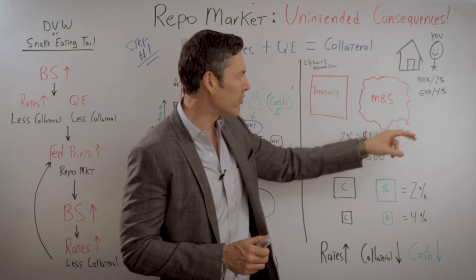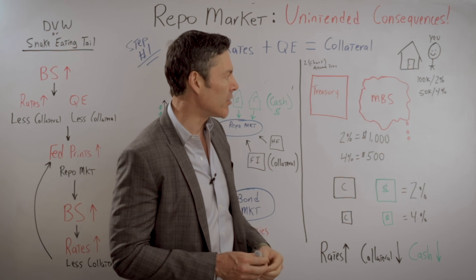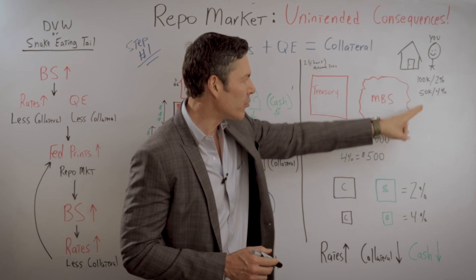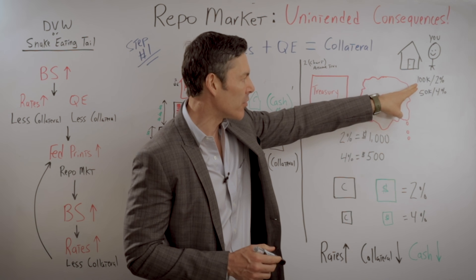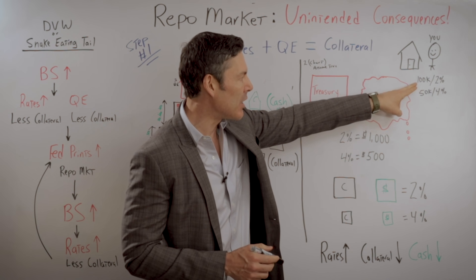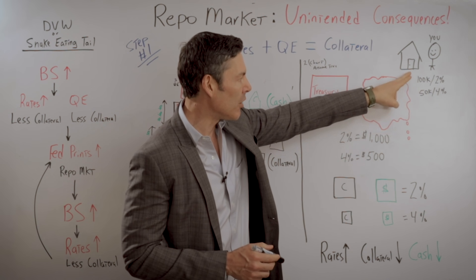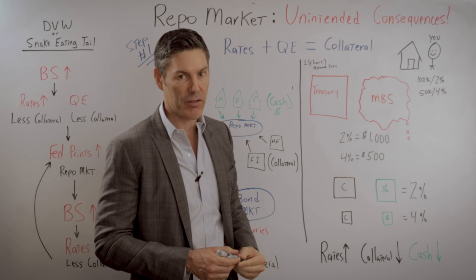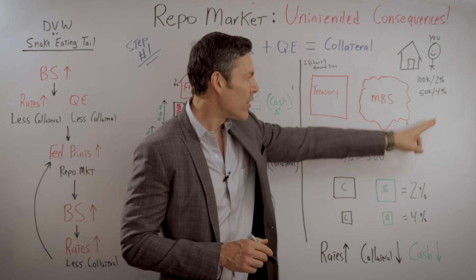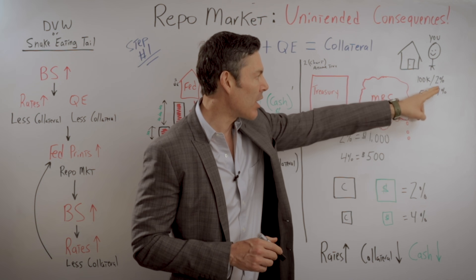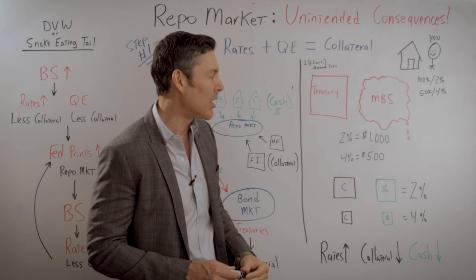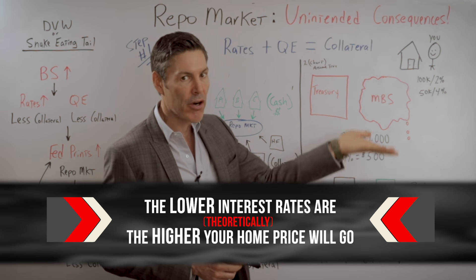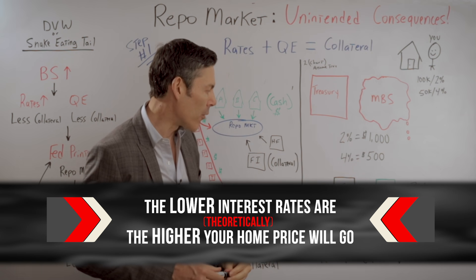This is just like your house. If you wanted to use your house as collateral on a loan and your house was worth $100,000, you would get a lot more money for that loan than if your house was valued at $50,000. And as we all know, that could be predicated upon interest rates — meaning the lower the interest rates are, theoretically the higher your home price will go.